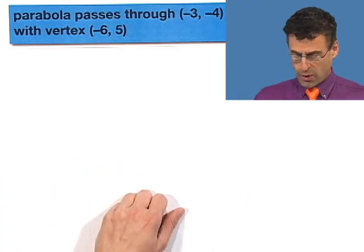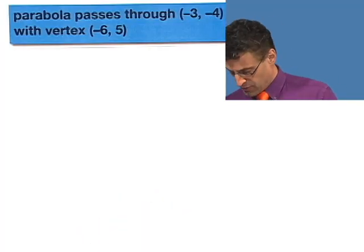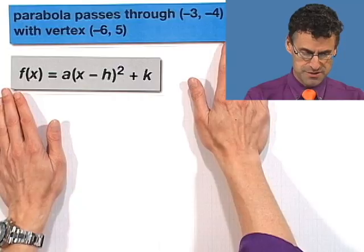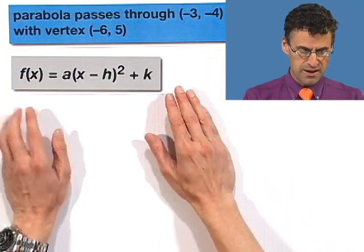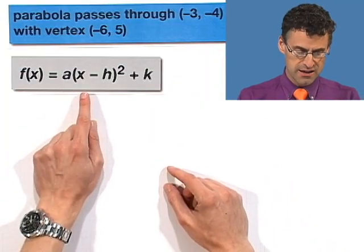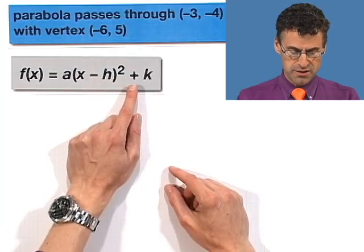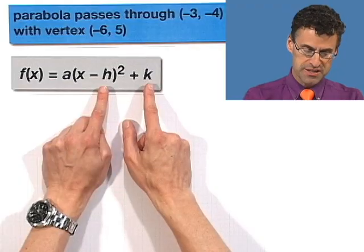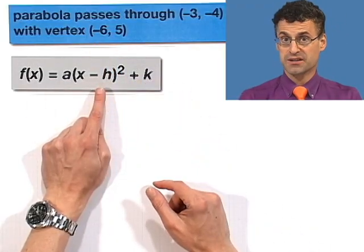So now how are we going to proceed here? Well, there's a couple of things that we can do. First of all, I want to remind you of one of the ways of writing parabolas, namely we can write it as a coefficient a times the quantity x minus h squared plus k, where the h and the k, h comma k represent the coordinates for the vertex.